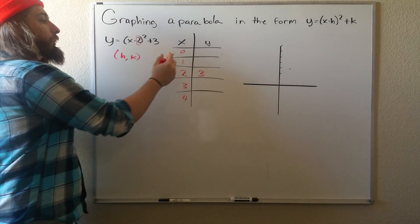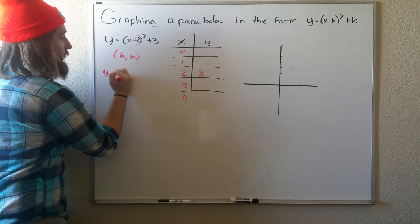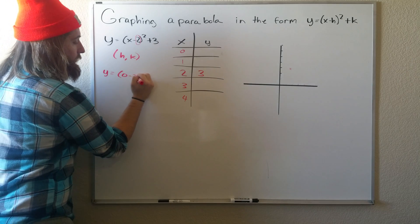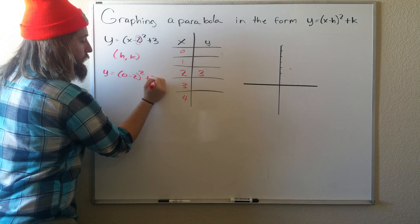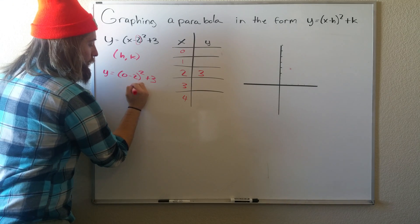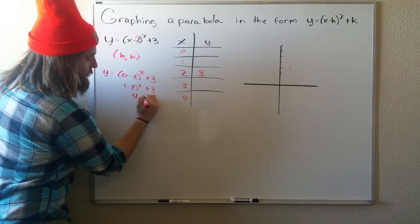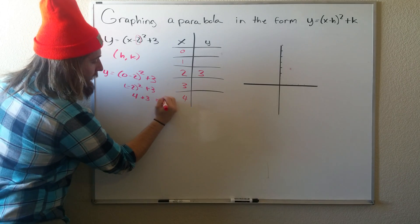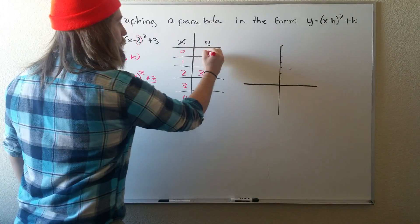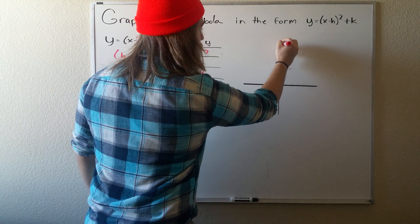All right, what we do with these is we plug it into this equation. So we have y equals 0 minus 2 squared plus 3. 0 minus 2 is negative 2. Negative 2 squared is 4. Make sure we add our 3. So we get 7. So we'll put 7 in our y column. Go to the graph. 0, 7.